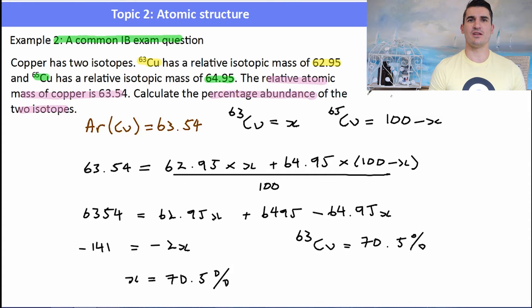Now that's the percentage abundance of the lighter isotope. So 63Cu equals 70.5%. So the leftover, well, this is where the hundred take away X comes in. So 65Cu must be just the remaining percentage, which is 29.5%.